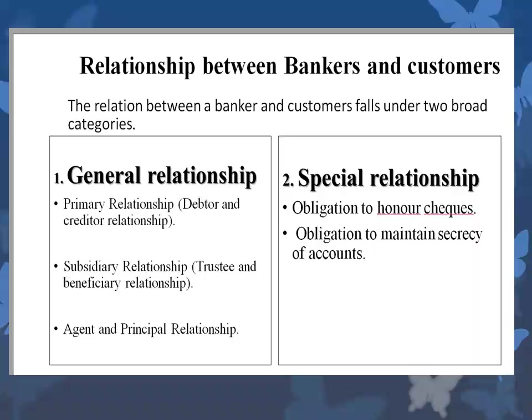The second relationship is that of a trustee and a beneficiary. A trust is a relationship between two persons by virtue of which one of them is called the trustee and holds property vested in him for the benefit of the other, called the beneficiary. For example, if a customer deposits securities or other valuables with the banker for safe custody, the banker acts as a trustee. The customer continues to be the owner of the valuables deposited with the bank.